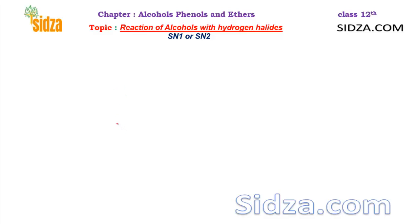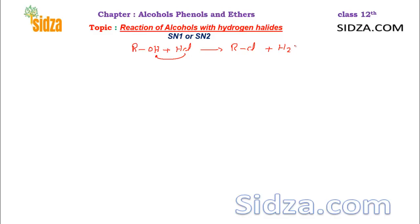Welcome to sitzat.com. In this video we will learn about the mechanism of the reaction of alcohols with hydrogen halides. When you react an alcohol molecule with a halogen acid like HCl, hydrochloric acid, you get an alkyl halide. The hydroxide group is replaced by the chlorine, so this is a substitution reaction — the hydroxide group is being substituted by chlorine — and you also get water because hydroxide reacts with hydrogen and forms water. This is a nucleophilic substitution reaction.